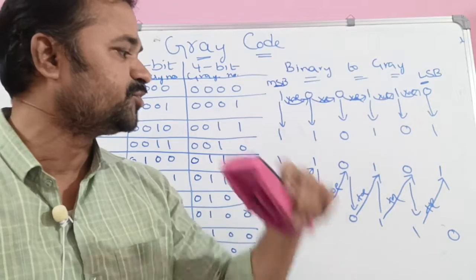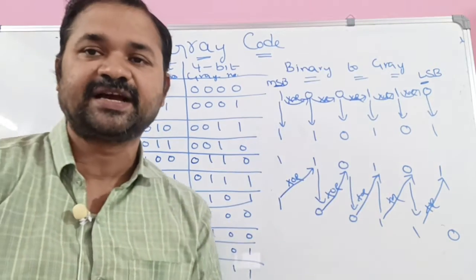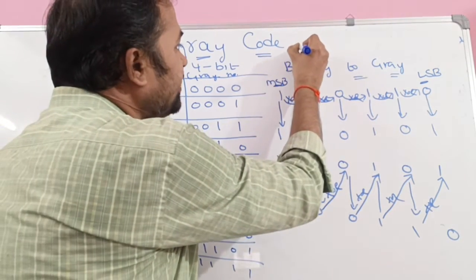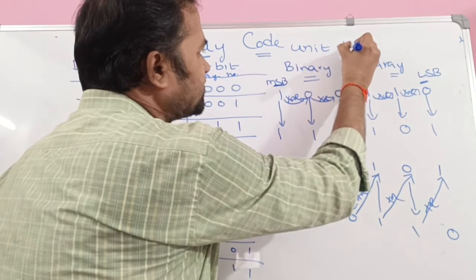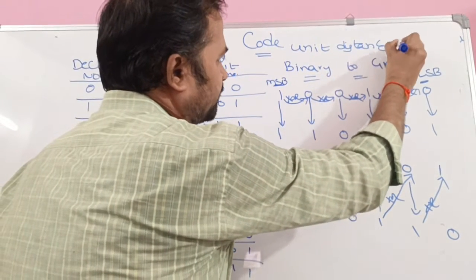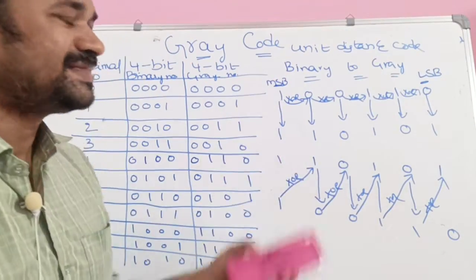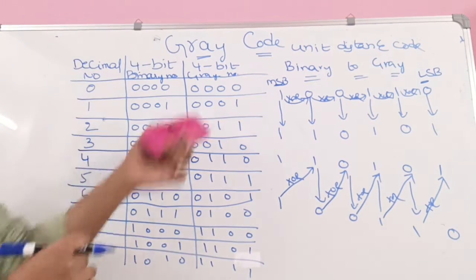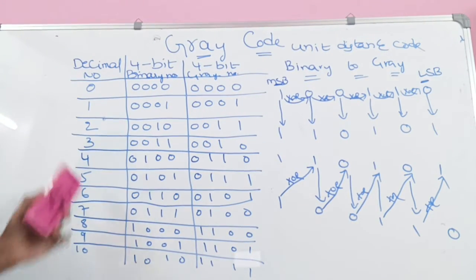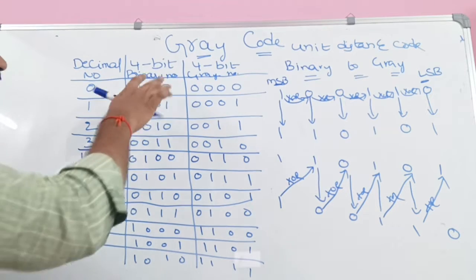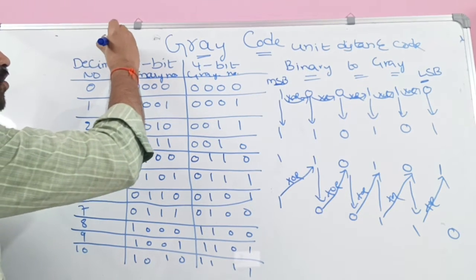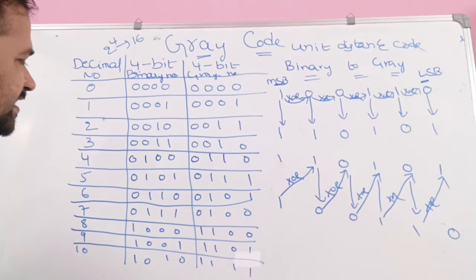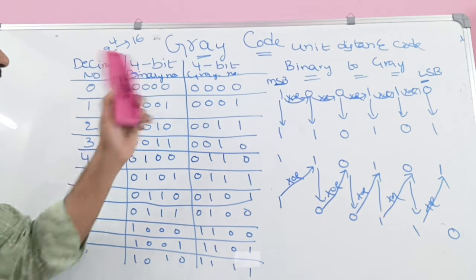So in this way we can convert binary number into gray code as well as gray code to binary number. Gray code is called a unit distance code. Because in gray code, successive binary numbers differ by only 1 bit. Let us look at this table: decimal numbers, 4-bit binary numbers — with 4 bits we can write 2 to the power 4, that is 16 numbers from 0 to 15 — and the corresponding gray numbers.